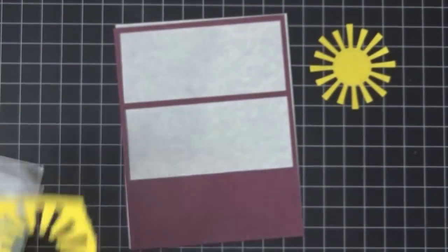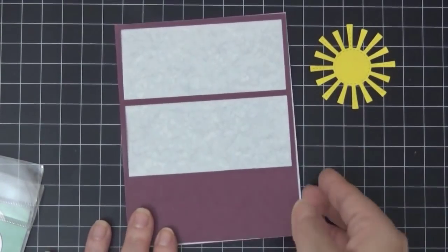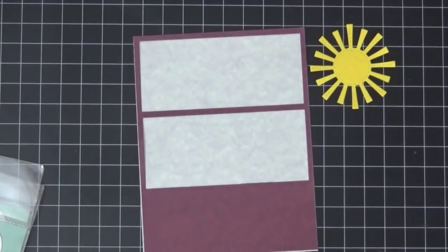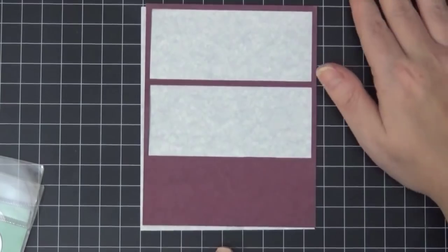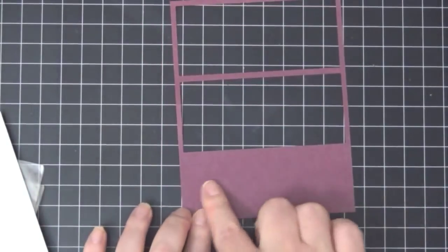So I went ahead and cut out a sun using the Lawn Fawns stitched die. And as you can see that's how it's going to look. Initially I was just going to cut a square frame to create my scenery, but when I saw this panel I thought it would be fun to create the scenery in these two separate panels. Something a little different.